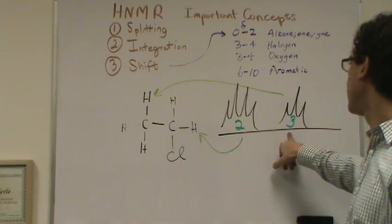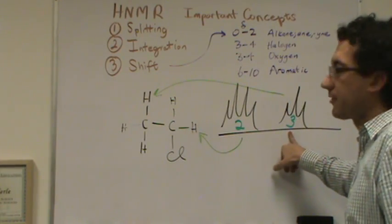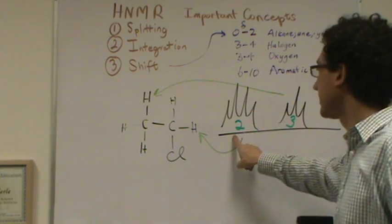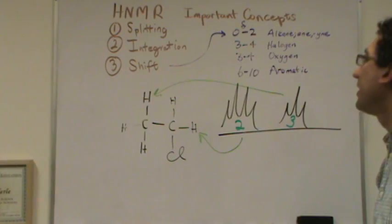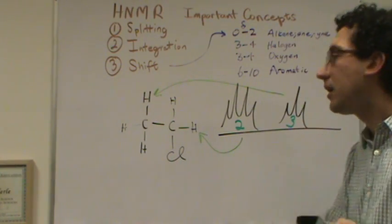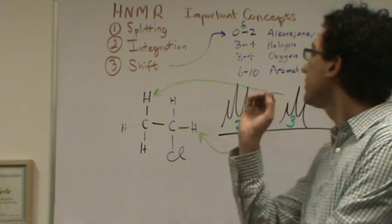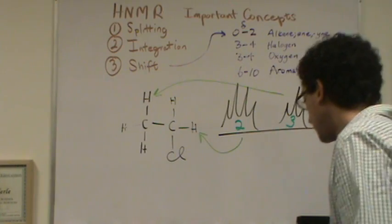So integration tells you, for the hydrogens that represent that peak, either the number of hydrogens there or really the ratio of hydrogens compared to hydrogens on a different peak. So this has an area of kind of three, if you want, and this has an area of two. That's what integration means. So that's your second piece of information. Not all NMRs give you integration, but sometimes they do. And then shift is the final one. Here's how shift works.